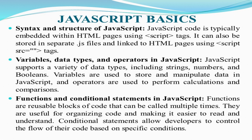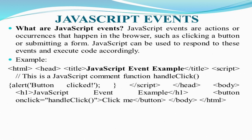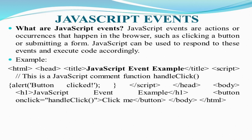Now, what are JavaScript events? An event is any action or occurrence that happens in the browser, such as clicking a button or submitting a form. JavaScript can respond to these events and execute code accordingly. For example, in a simple HTML code with a JavaScript event example, you define a function that triggers an alert saying 'button is clicked.' The script is embedded within the head section using script tags, and the function handles the event when the button is clicked.